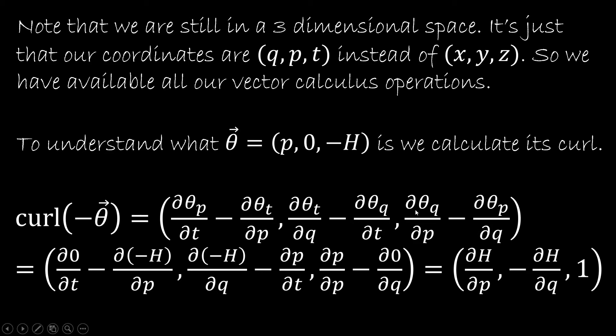For the last component, we take the component in Q, which is going to be P, and the component in P, which is going to be zero. So we have the derivative in P with respect to P, which is one, minus the derivative of zero with respect to Q, which is zero.